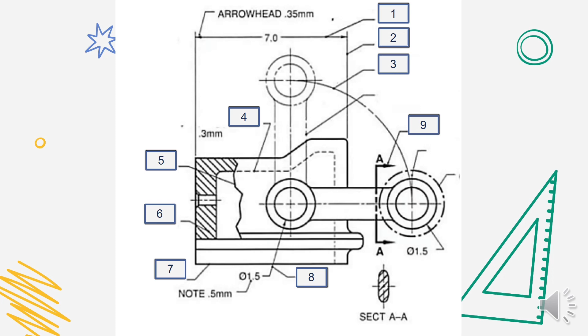Number 8: what alphabet of lines is used here? And number 9: what do you think is the alphabet of lines used?